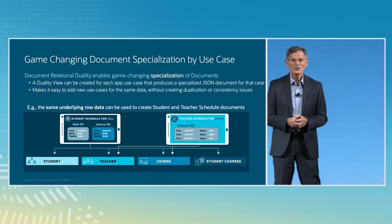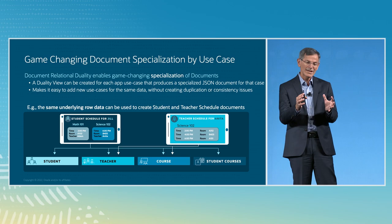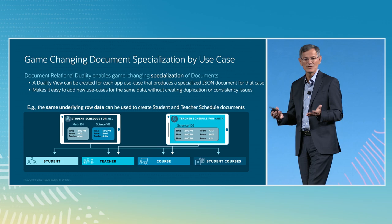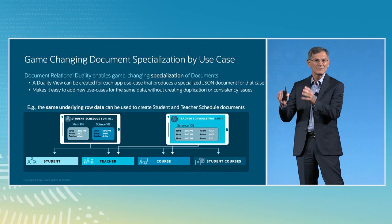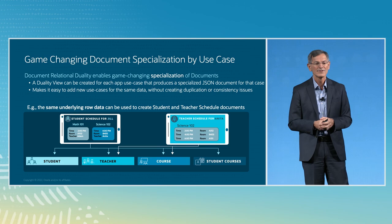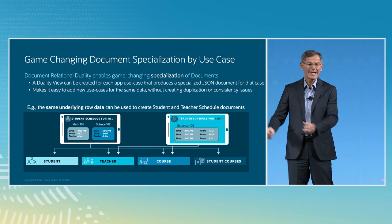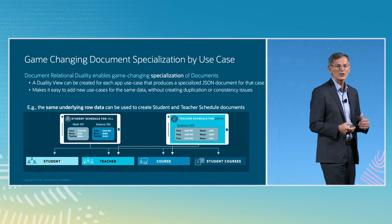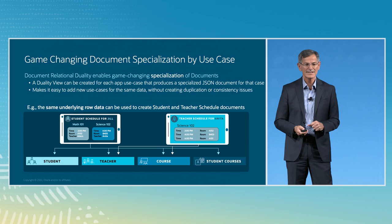With JSON duality, because we're using the document-relational duality approach, we can specialize each document for each use case. You can create an application-specific view that's specialized — giving you just the data in just the format you want for a use case. This makes it easy to add more use cases without creating duplication and consistency issues. For example, if you built the student schedule with a duality view, you can add a new duality view for the teacher schedule. It organizes the data in a very different way, but shares the underlying data with no duplication issues. You can also specialize by reducing data or securing data.